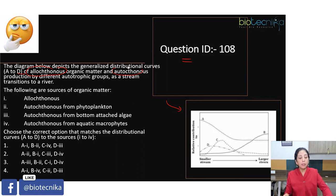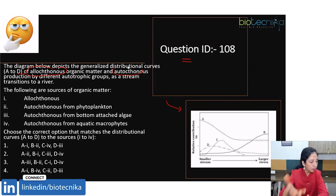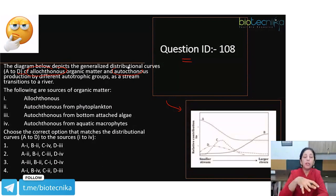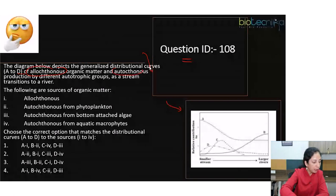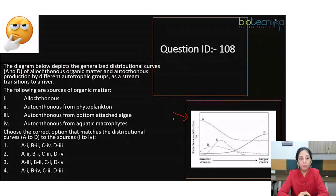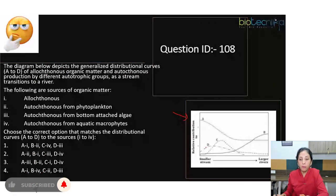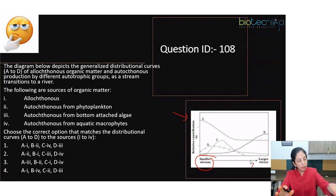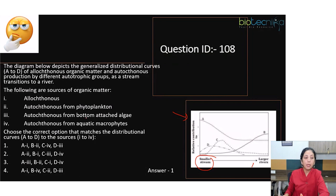Allochthonous is the name given to deposits of organic matter that are deposited at a place away from their original source. Autochthonous refers to deposits at the same place of origin. Keeping these two terms in mind, we have to find out what pattern they follow as we move from a small stream of water to large rivers. The answer is option 1.